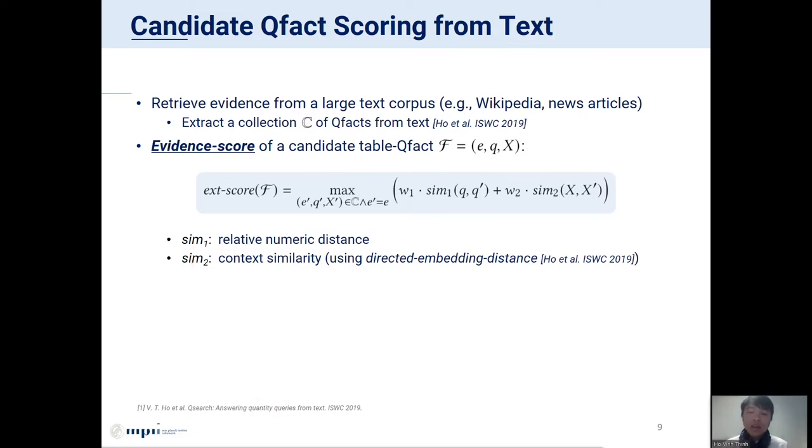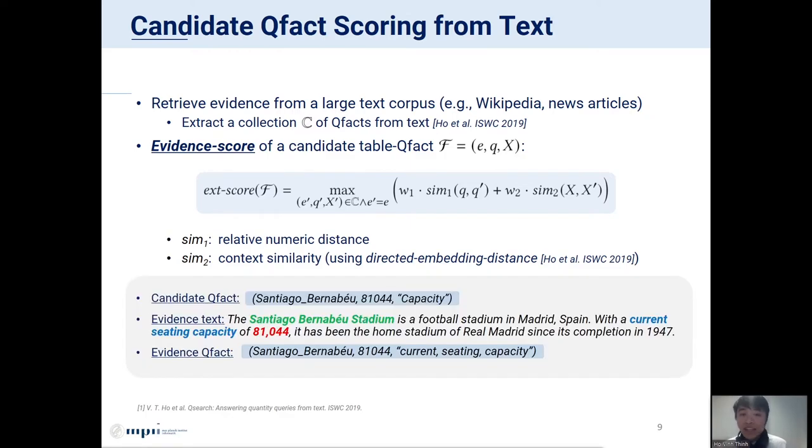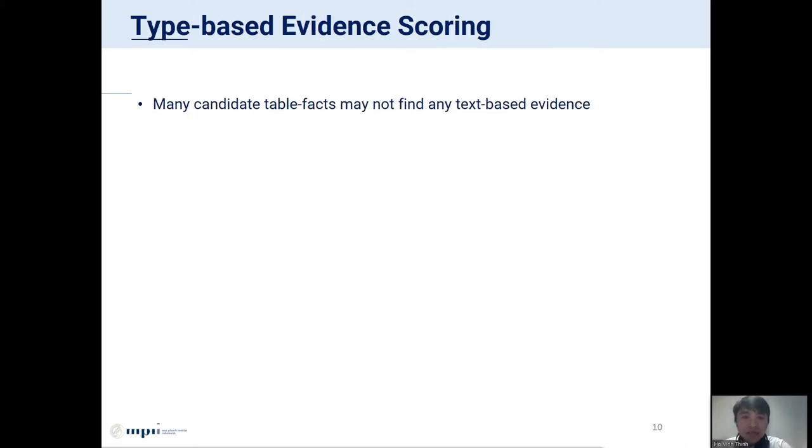For example, when estimating the quality of this candidate QFact, we find a text snippet. From this text, we can extract an evident QFact. You can see that both the candidate QFact and the evidence QFact mention the same information. But this method does not always work because for many candidate facts from the table, we may not find any text-based evidence. This is expected because if we can always find the same information in text for any candidate table QFact, then there is no reason to extract facts from tables. Instead, we can extract from text only.